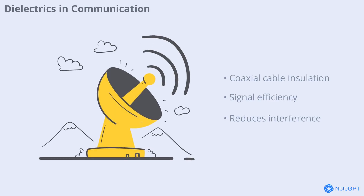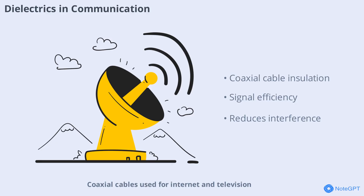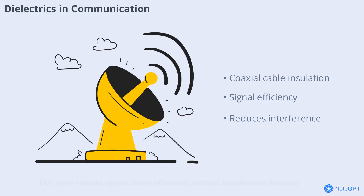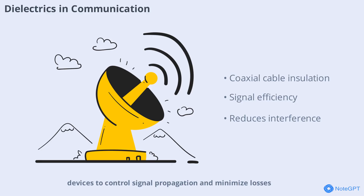In the world of communication technology, dielectrics play a vital role. Coaxial cables used for internet and television have a dielectric layer separating the inner and outer conductors. This layer ensures signals travel efficiently without interference. Similarly, dielectrics are used in antennas and radio frequency devices to control signal propagation and minimize losses, making modern communication possible.